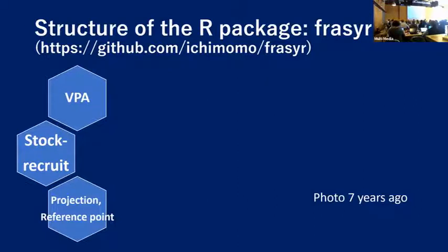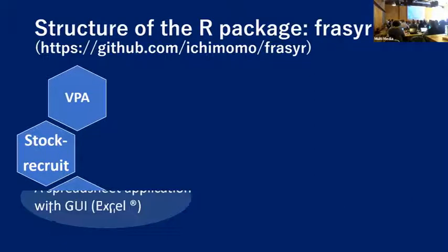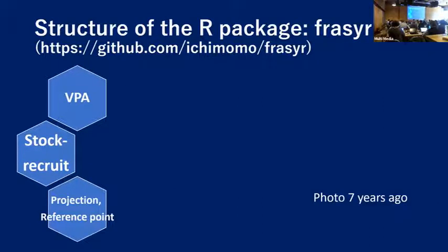This is the structure of the R package Frasier R, which stands for FRA Estimate Sustainable Yield with R. Frasier R has three different components: one is a VPA part to estimate stock abundance using VPA, then we conduct stock-recruitment relationship estimation, and then future projection to estimate reference points. Because VPA is a very standard stock assessment model that does not need assumptions about stock-recruitment relationship, those components can be independently developed.